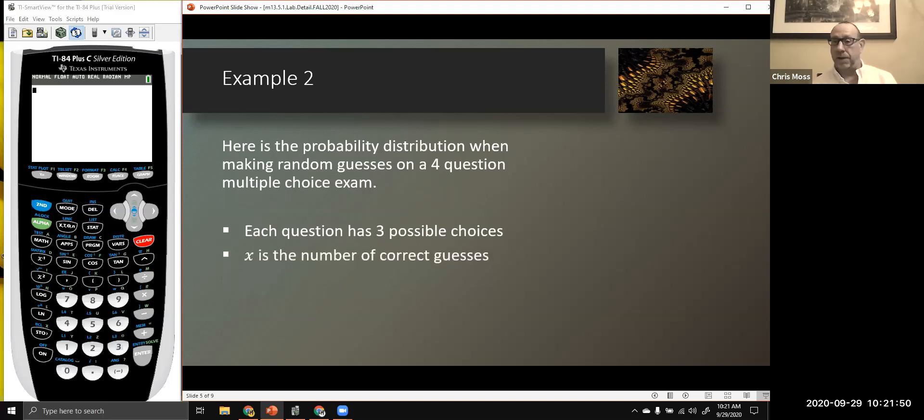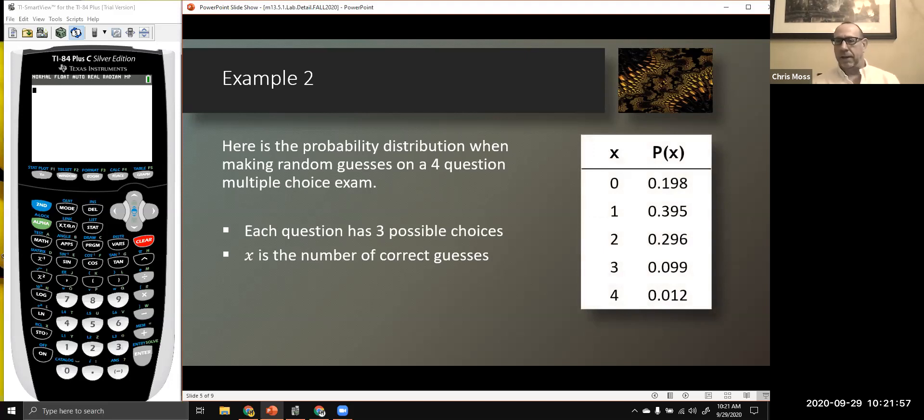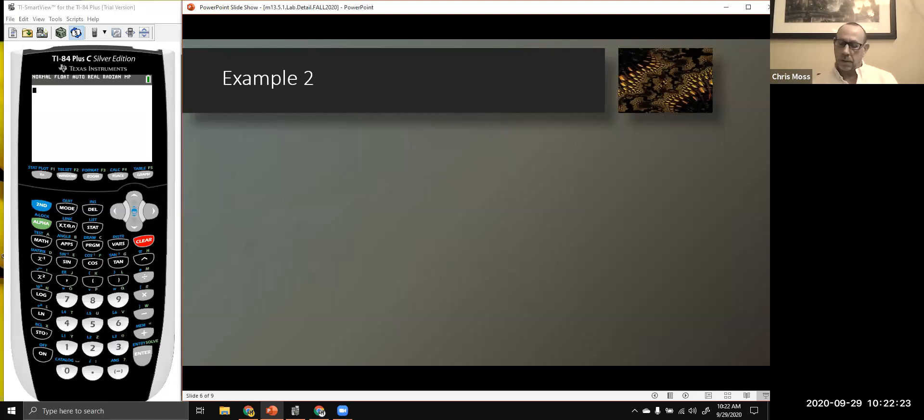A random variable X is going to stand for the number of correct guesses. So I could make anywhere from zero through four correct guesses. Those are the probabilities for each of those particular outcomes. And we'll be working with this distribution for the balance of the presentation. You'll notice that those probabilities add up to one. And you'll also notice they all fall between zero and one inclusive as any good probability should.